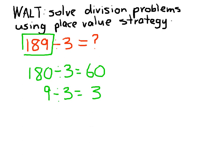And to solve our question of 189 divided by 3, we add 60 plus 3 together. So it equals 63. So our answer here is 63.